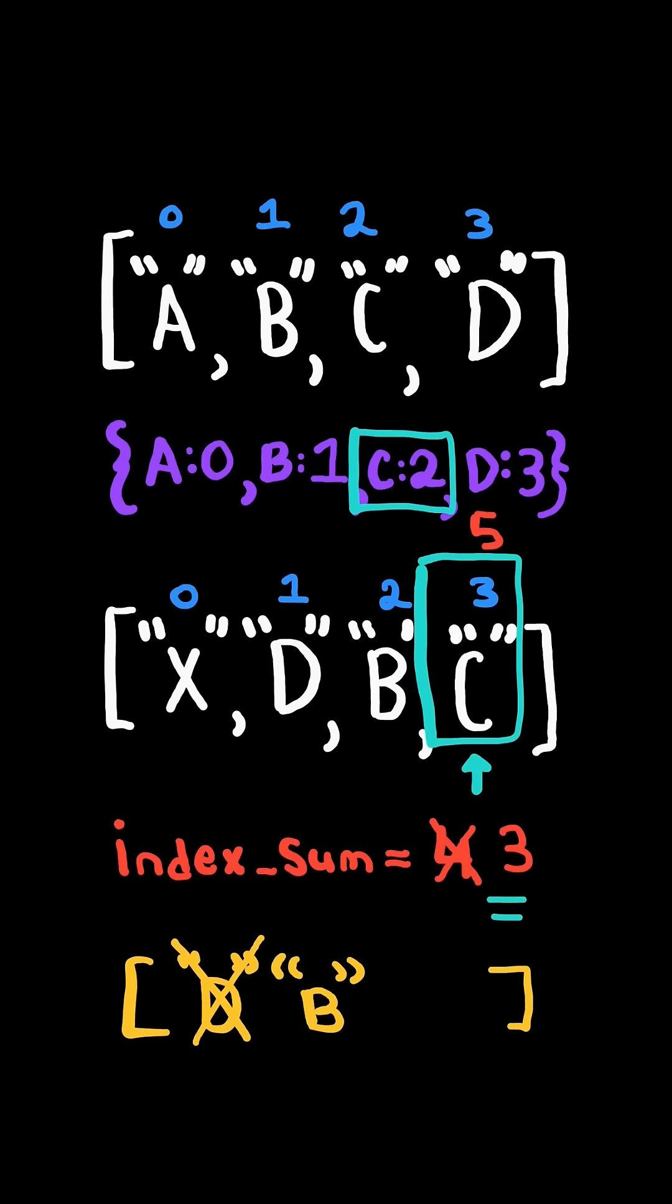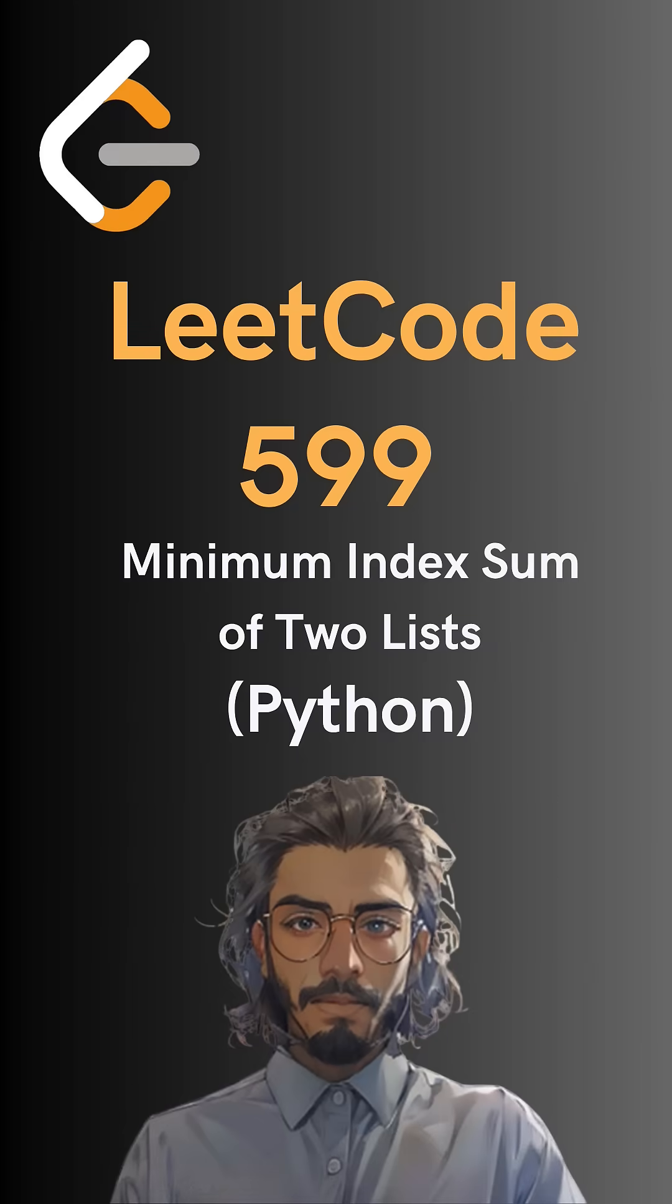Again, the string exists in the map, but its index sum is greater than current. So we skip it. And here is the code to do so. Please like and follow for more.